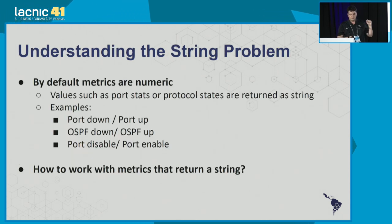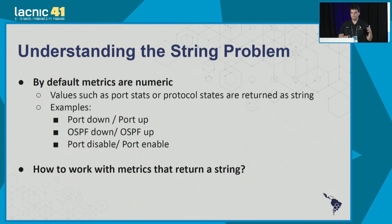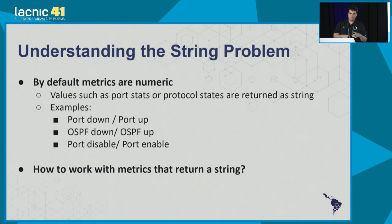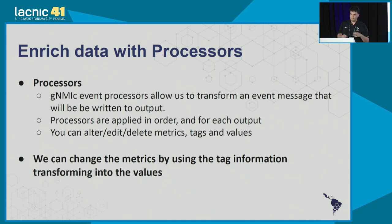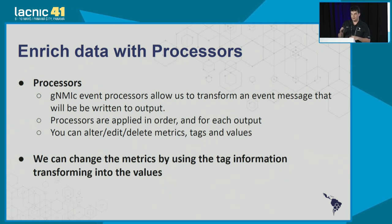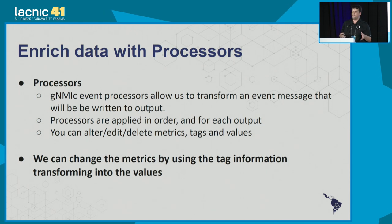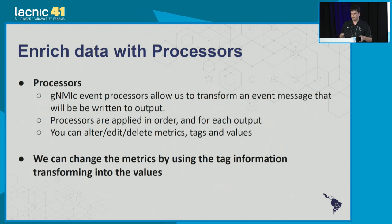So we need a way to process the collected data. Some states and protocols give us strings, and we need to work with these strings — adapt these metrics, create standards from them — so we can use them in our software later. We are going to use the processor for this. Processors allow us to transform these messages, add personalized tags and values, change metrics, and convert them to numeric values so we're not working with 'up' or 'down' but with ones and zeros.